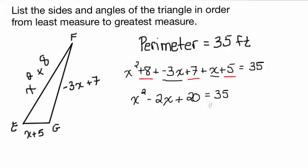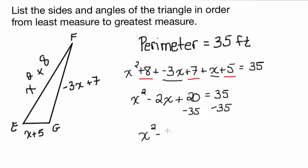So now you're probably saying, oh, this looks familiar — this is a quadratic equation. I could solve it using the quadratic formula, or by factoring. But first we have to set it equal to 0. So we end up with x squared minus 2x minus 15 equals 0.